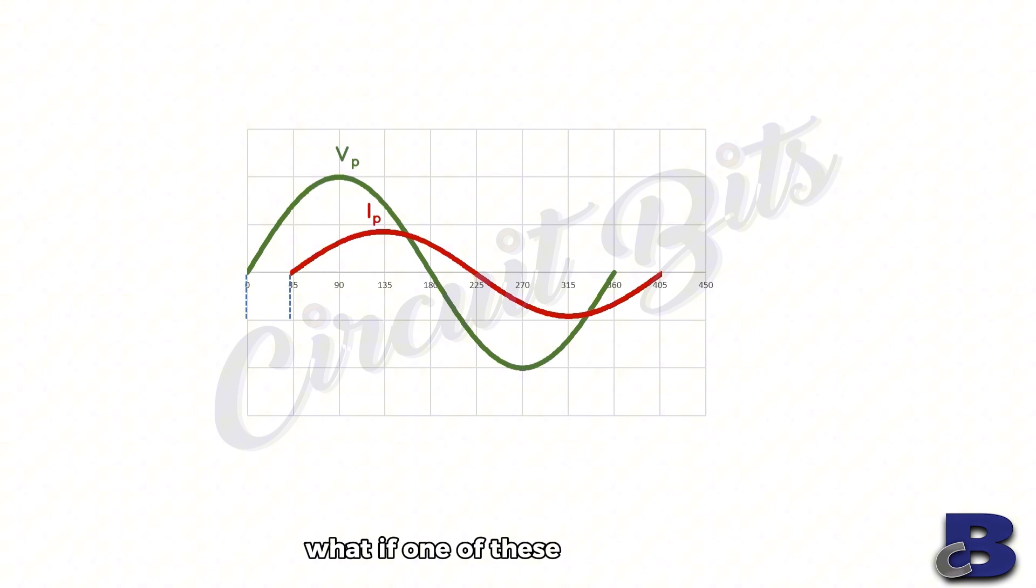What if one of these waves shifts? Then we have a phase shift, which makes both waves out of phase, and we can say they have a phase difference.